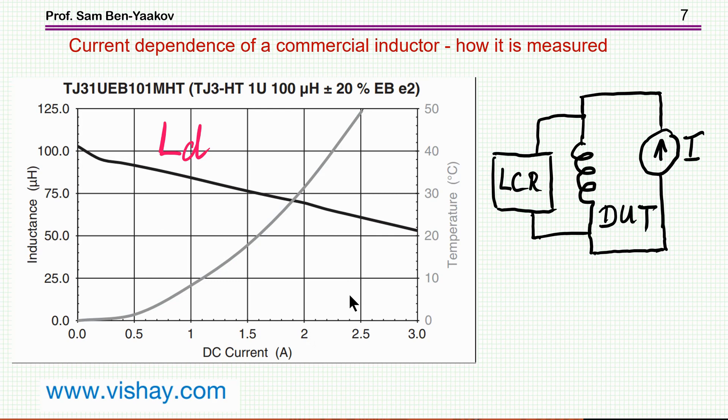The way it is measured is the following. The inductor is subjected to DC current. This should be a high impedance source. It could be built around the same MOSFET. And then you measure the inductance. This is the local small signal inductance at any given point as a function of the current. You do it for different current, and this is how you generate this curve.